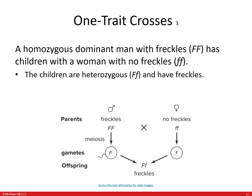Now let's look at another example. A homozygous dominant man with freckles — uppercase FF — has children with a woman with no freckles — lowercase ff. The children produced are heterozygous, with uppercase F and lowercase f, which means they are going to have freckles.